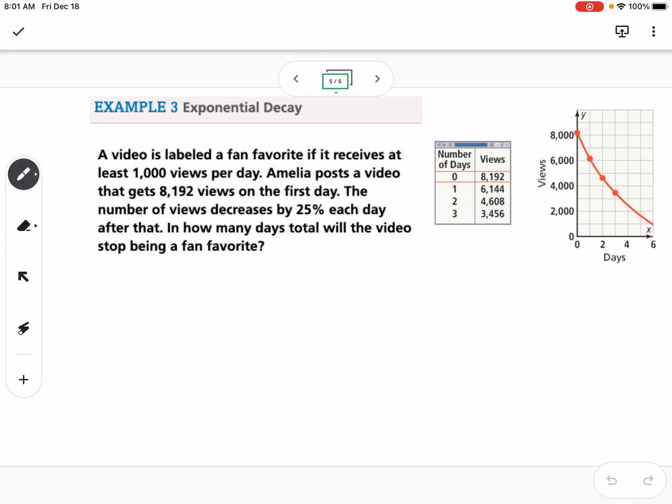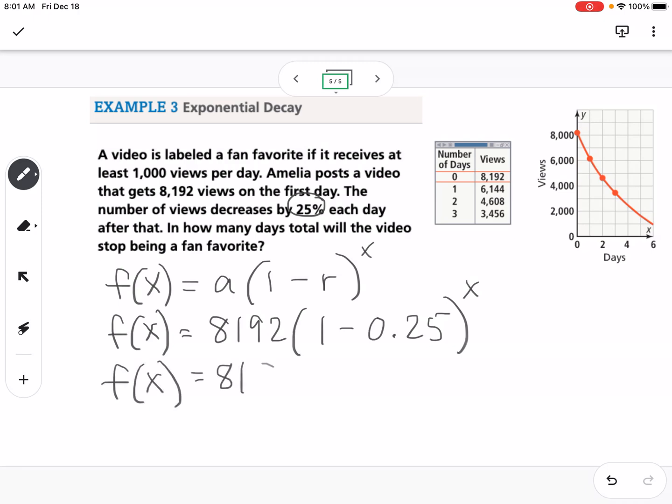So we want to set up our equation. With exponential decay, it's a little different. It's a(1 - r)^x. So if it's growing, it's plus r. If it's decaying or decreasing, we're going to say 1 minus r. So the starting day was 8,192. Our 25% we write as a decimal, so it's 0.25. We divide by 100 to get that decimal. So if I have 1 minus 0.25, it's going to be 0.75. So that's our equation.